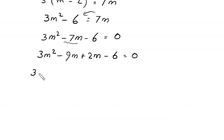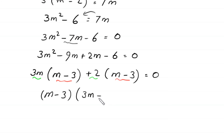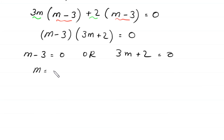From the first two terms we factor out 3m, giving 3m(m − 3). From the last two terms we factor out 2, giving 2(m − 3). So (m − 3)(3m + 2) = 0. Either m − 3 = 0, giving m = 3, or 3m + 2 = 0, giving m = −2/3.